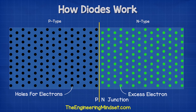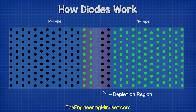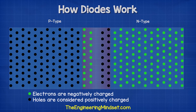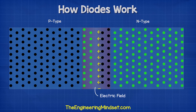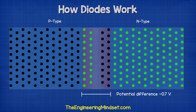The two materials join to form a P-N junction. At this junction, we get what's known as a depletion region. In this region, some of the excess electrons from the N-type side will move over to occupy the holes in the P-type side. This migration will form a barrier with a buildup of electrons and holes on opposite sides. The electrons are negatively charged and the holes are considered positively charged, so the buildup causes a slightly negatively charged region and a slightly positively charged region. This creates an electric field and prevents more electrons from moving across. The potential difference across this region is about 0.7 volts in typical diodes.